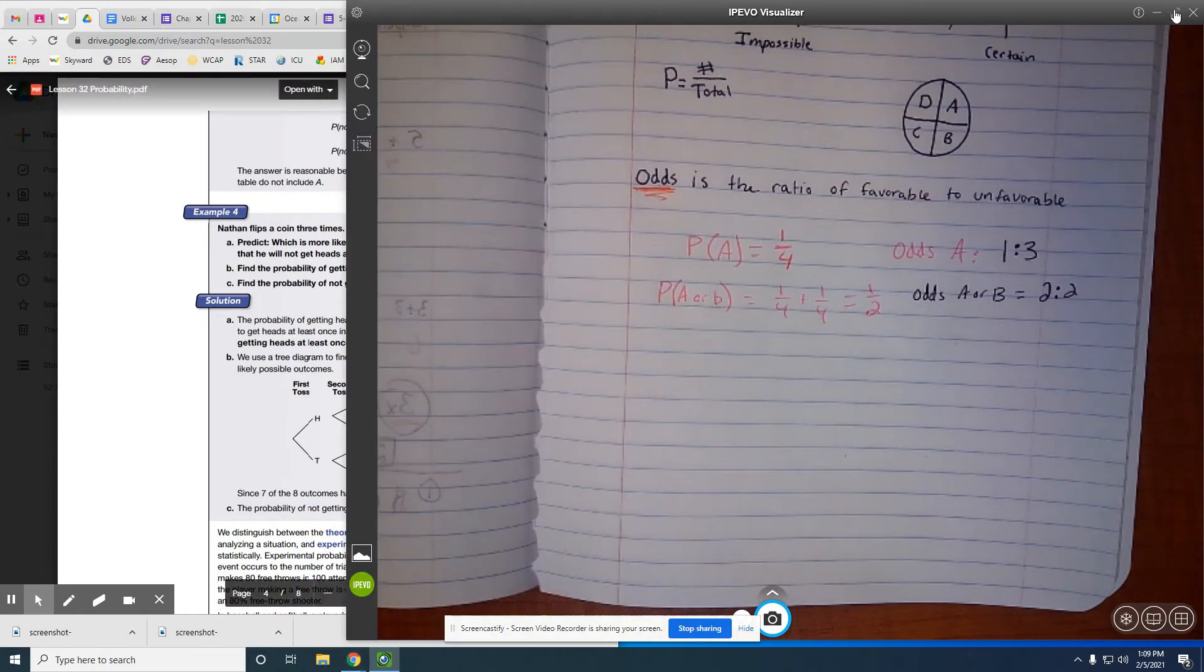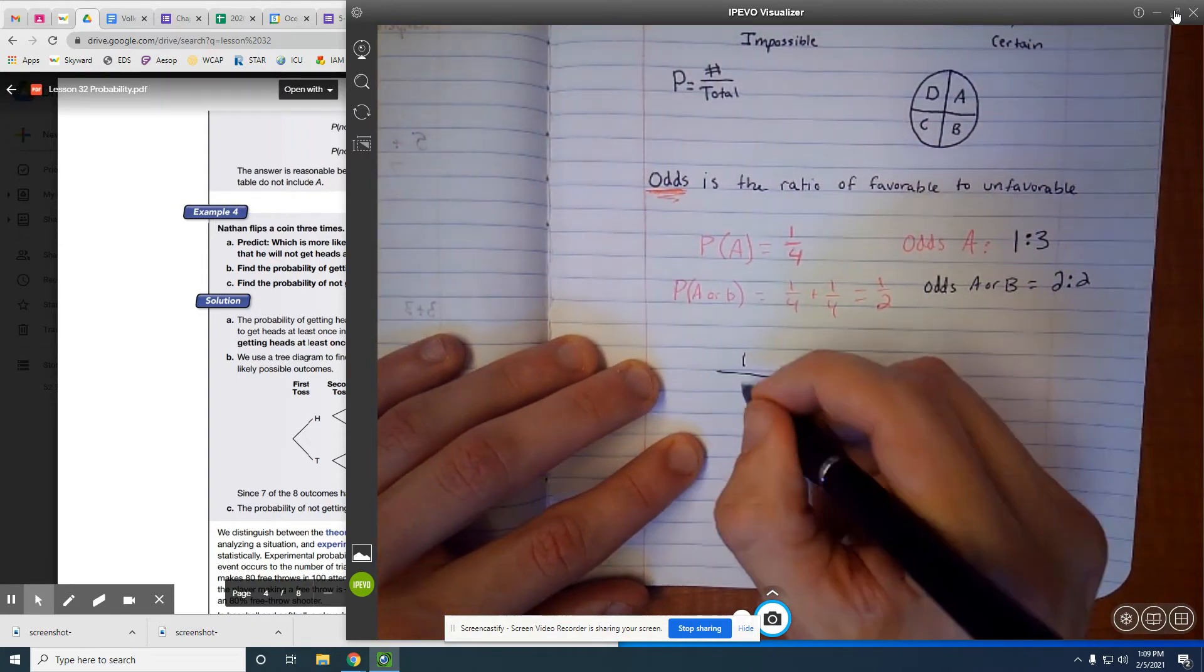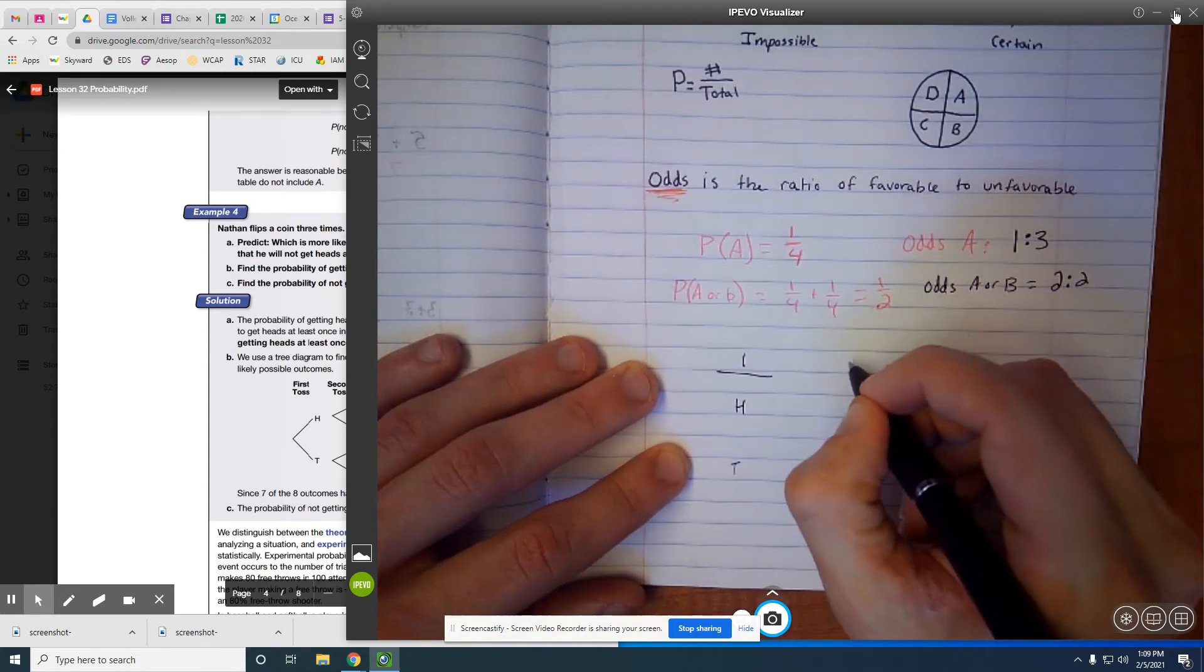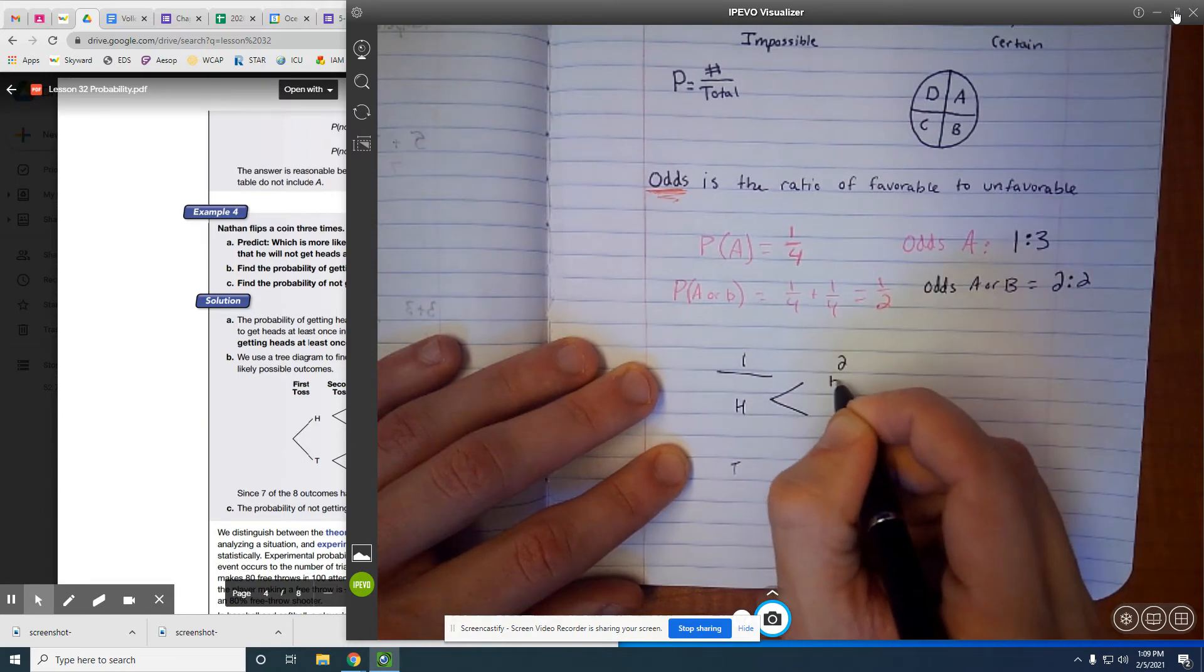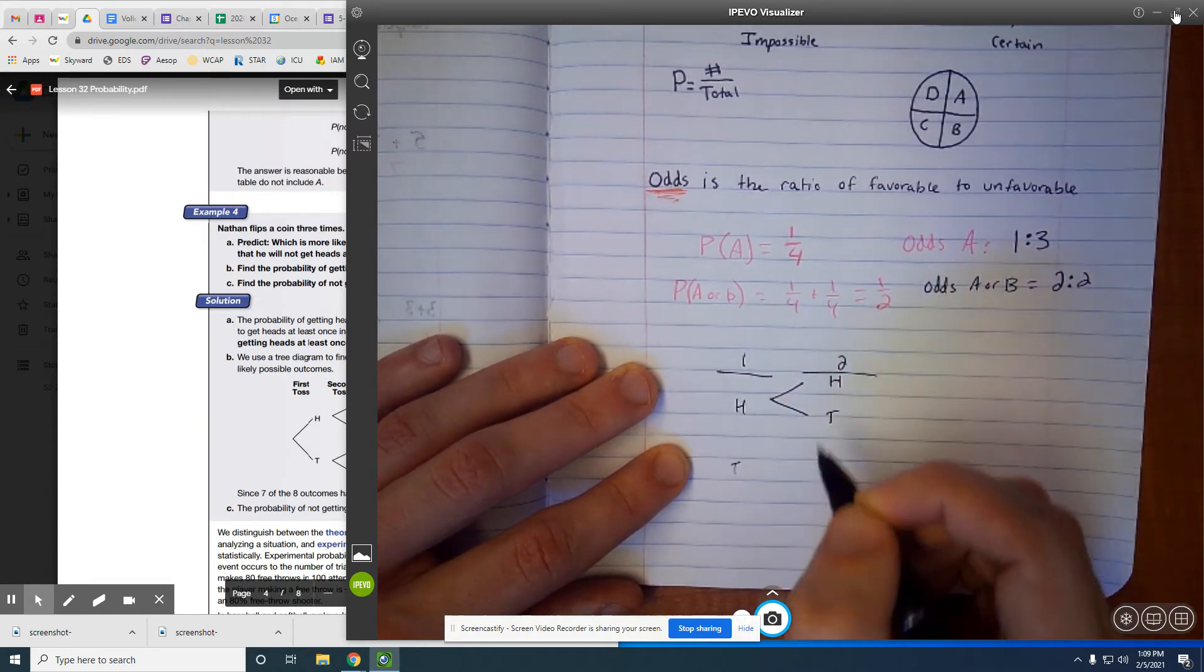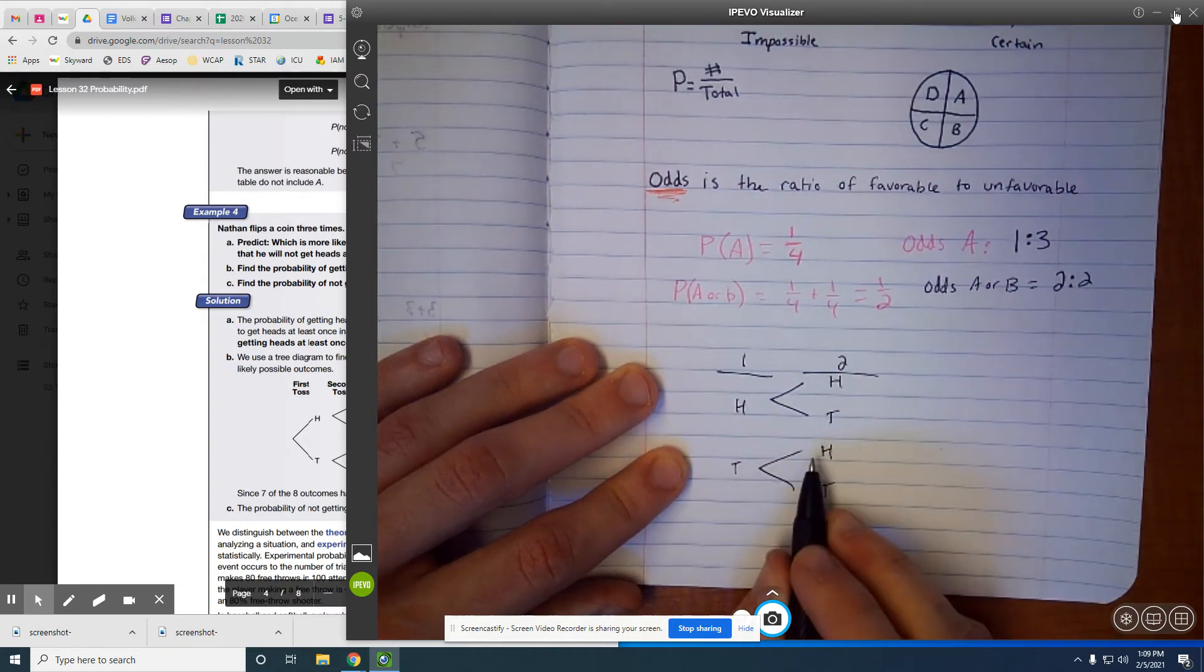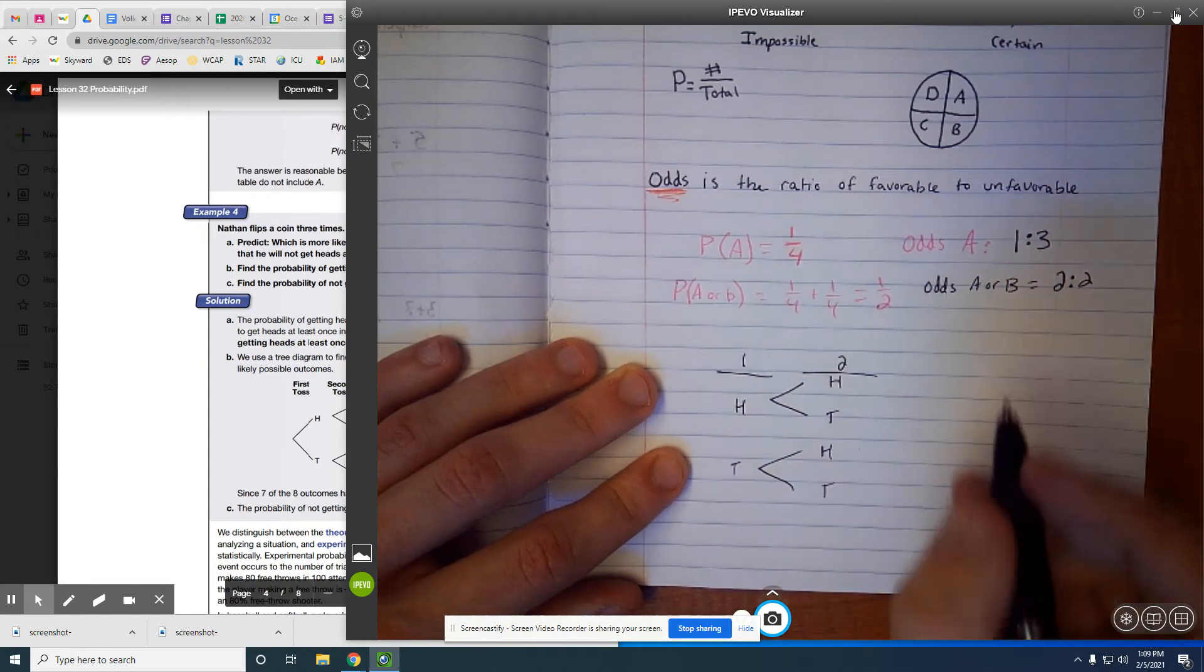Okay, so let's write this out, similar to how they have it. So we've got our first toss, and hopefully you know that we can only get heads or tails. Okay, second toss. Well, if we got heads the first time, we can get heads or tails. Same thing right here, heads or tails. We can hit tails the first time, and then heads, tails, tails, heads, heads, heads, tails. Those are kind of all of our options.